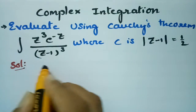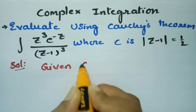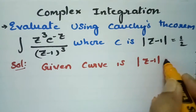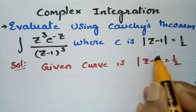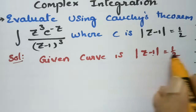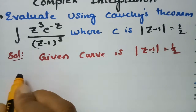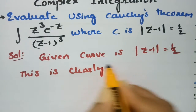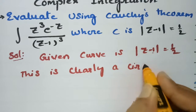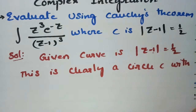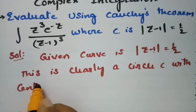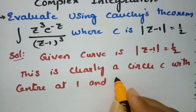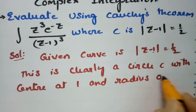What is the curve given here? The given curve is modulus of z minus 1 equals one half. This means it is the equation of a circle with center 1 and radius one half, that is 0.5. This is clearly a circle c with center at 1 and radius 0.5.